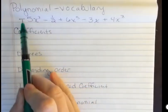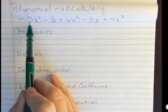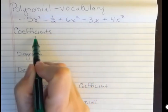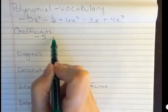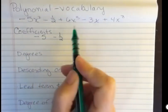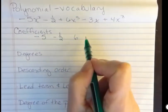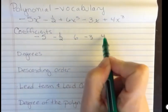The coefficient is the number multiplying the variable. So if I wanted to list the coefficients here in order, I have negative 5, negative 1 half, 6, negative 3, and 4.